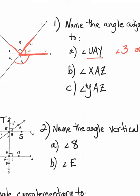Now let's see if we can find the angle adjacent to XAZ — that's angle number one. Again, there are two possible answers. I can say angle five, because it shares side AZ, or I can say angle number two, because it shares side AX. Both of those would be adjacent to angle XAZ.